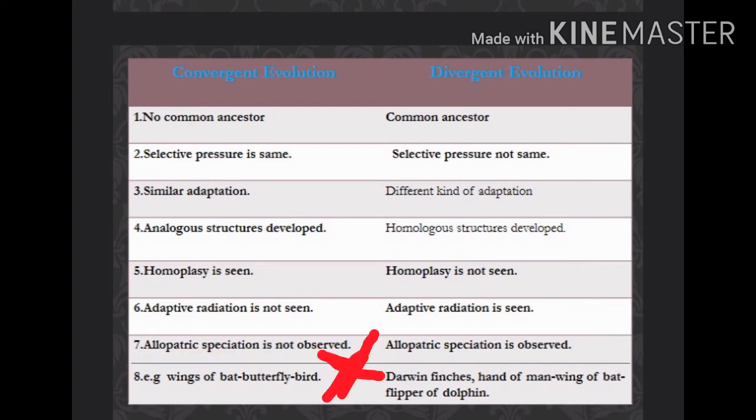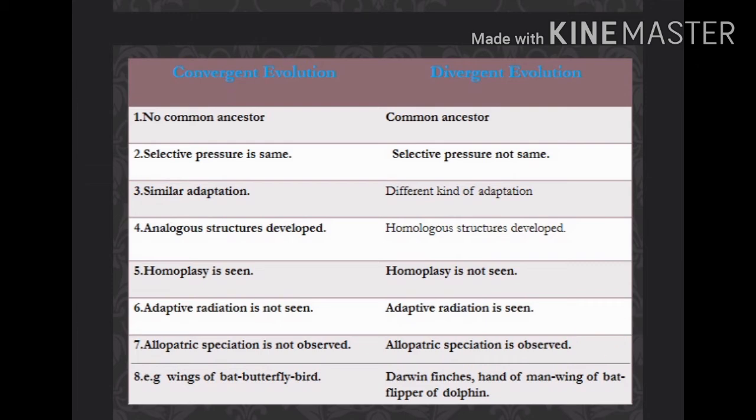The seventh point: in convergent evolution, allopatric speciation is not observed. But in divergent evolution, allopatric speciation is observed.